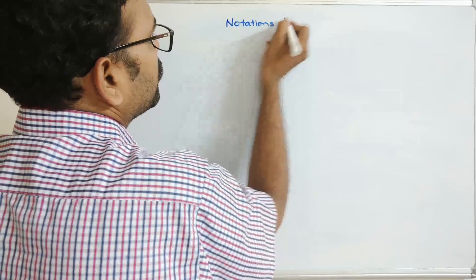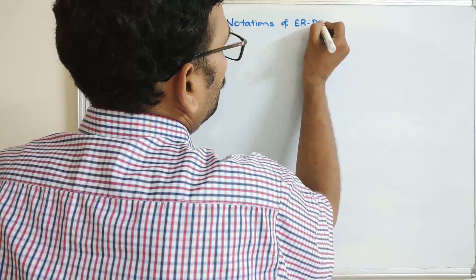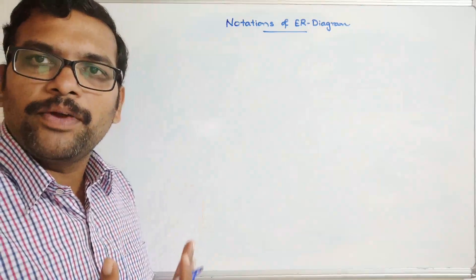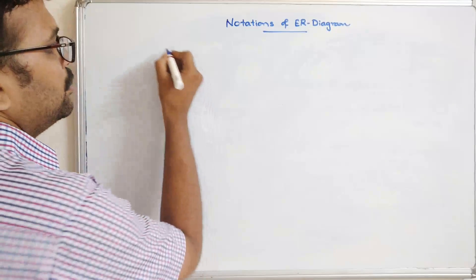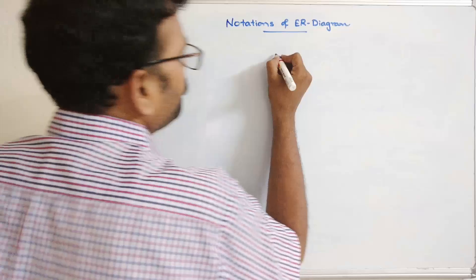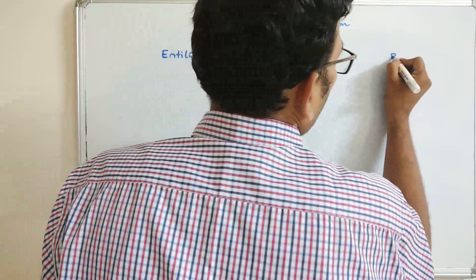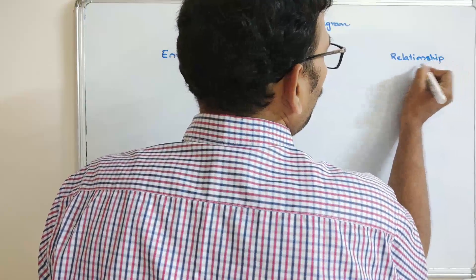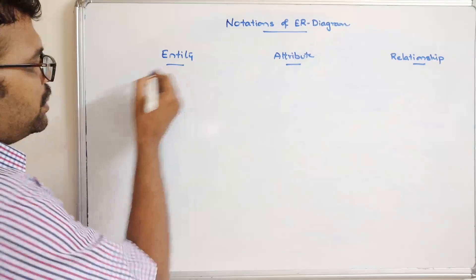Let us recall the components of the ER diagram. The components are: entity, attribute, and relationship. We have to draw the ER diagram based upon these three components.